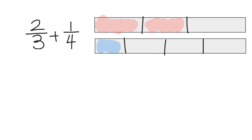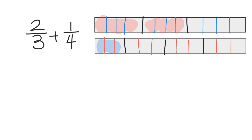It might be a little hard to see in your brain, so let's just draw it. We're going to take each of these thirds and cut them into four pieces, like so. And then we're going to take each of these fourths and cut them into three pieces. I'm color coding to help you see. Now all of a sudden we see that our intervals, if I had drawn it perfectly, are the same.